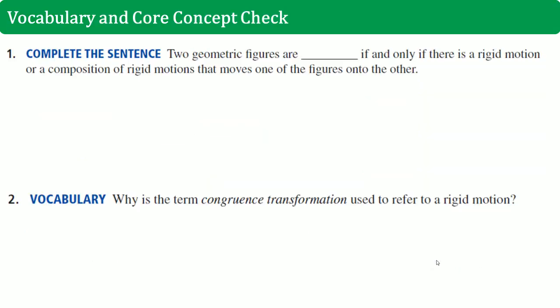So here you are going to complete the sentence for the vocab and core concept check. One, complete the sentence. Two figures are blank if and only if there is a rigid motion or a composite of rigid motion that moves one of the figures onto the other. You are correct. It is congruent.